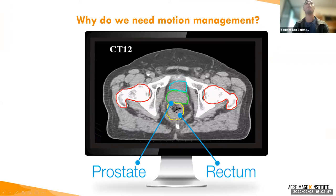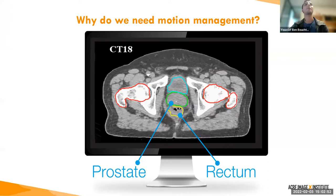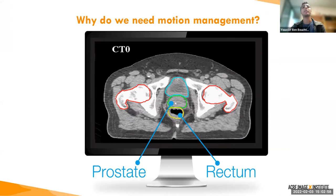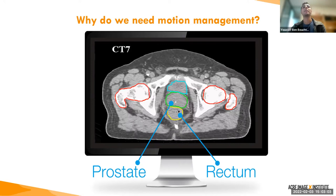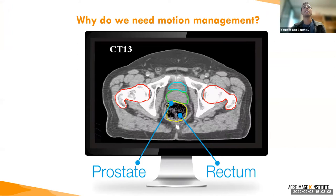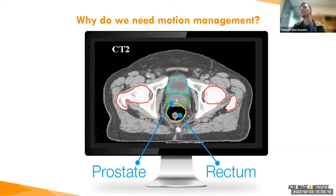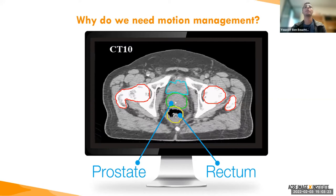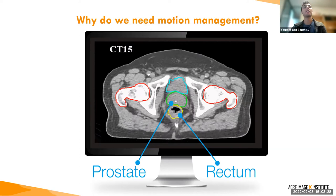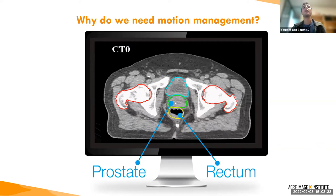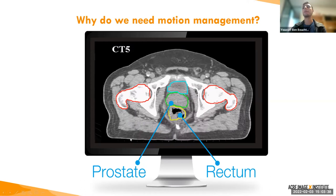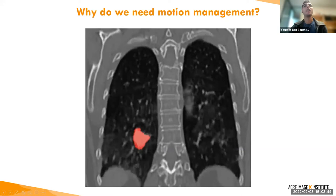Let's start with why we need motion management. In this image, which you've seen in a previous lecture, you can see cone beam CTs taken every fraction, showing that different organs at risk and the prostate — the target in this case — are moving day to day, despite patient setup with tattoos and as closely to the planning day as possible. This is due to positioning errors but also internal motion, so it's very important for us to manage that motion to get the best result possible during radiotherapy treatments.